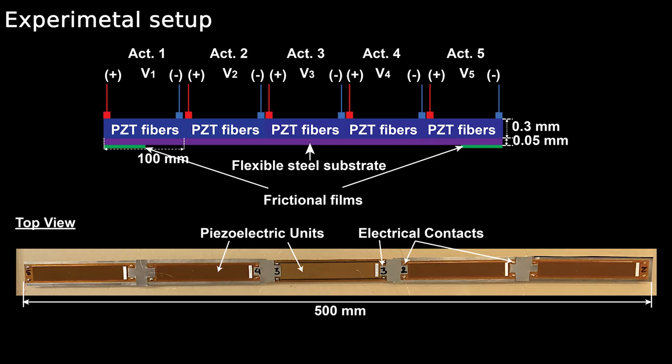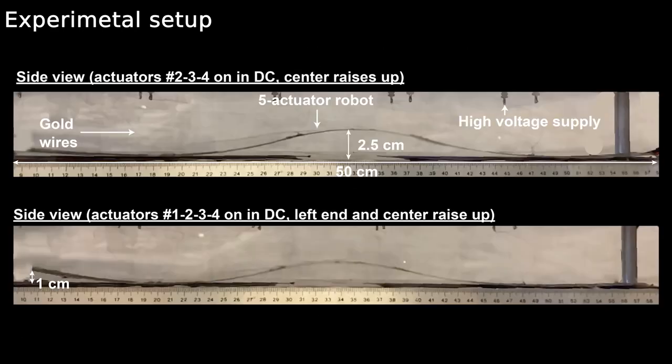The robot consists of five piezoelectric actuators bonded to a single steel foil. We attach high-friction films on the underside at the two ends. Each actuator will bend up or down depending on the applying voltages.